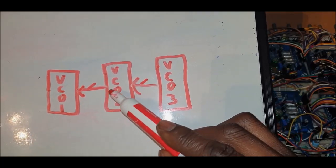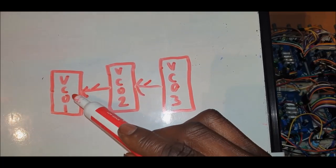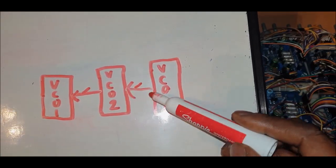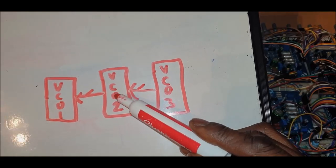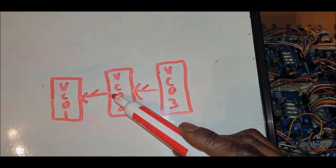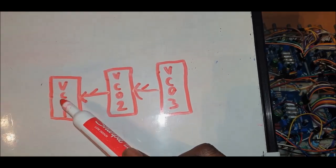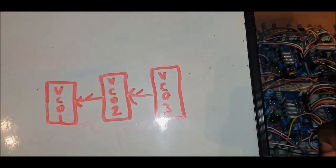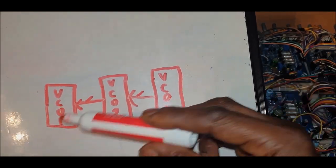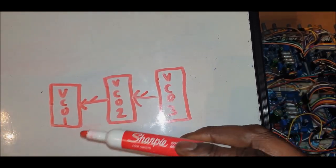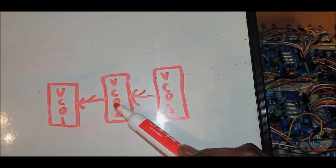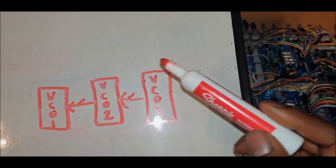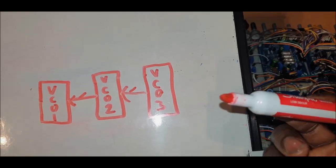VCO2 modulates VCO1. So if we have VCO3 modulating VCO2 already and then go to modulate VCO1, we will actually create even more sidebands than we would get from just a basic two-oscillator cross modulation.